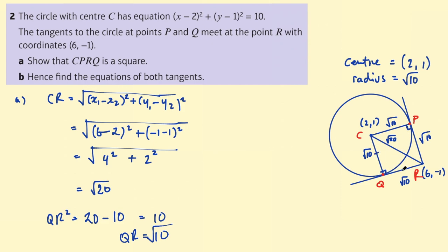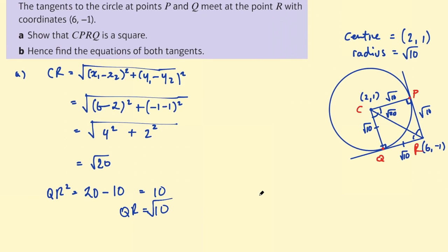And we know this is now an isosceles triangle. Well an isosceles triangle with one corner that's 90 degrees means the other two corners are 45 degrees. These would also be 45, PCR and PRC. So therefore all of the angles are 90 degrees. All of the sides are equal. Therefore we can say CPRQ is a square.